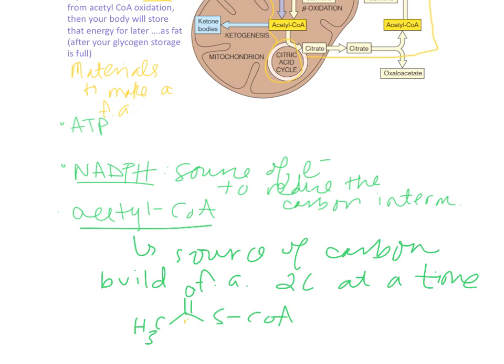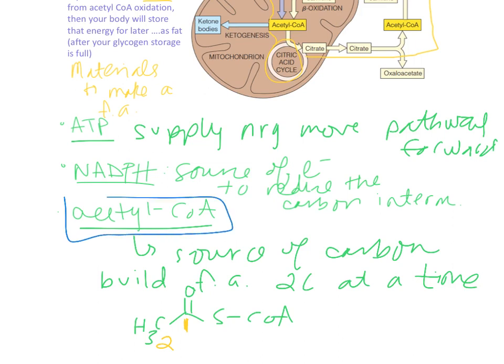Acetyl-CoA is our two-carbon building block—carbon number one and carbon number two. And then ATP here is going to supply some energy to move the pathway forward. Those are the materials that we need in order to make a fat. Today we're going to talk about where acetyl-CoA comes from, NADPH comes from, and where ATP comes from. And then next time we're actually going to use the materials to make a fat.